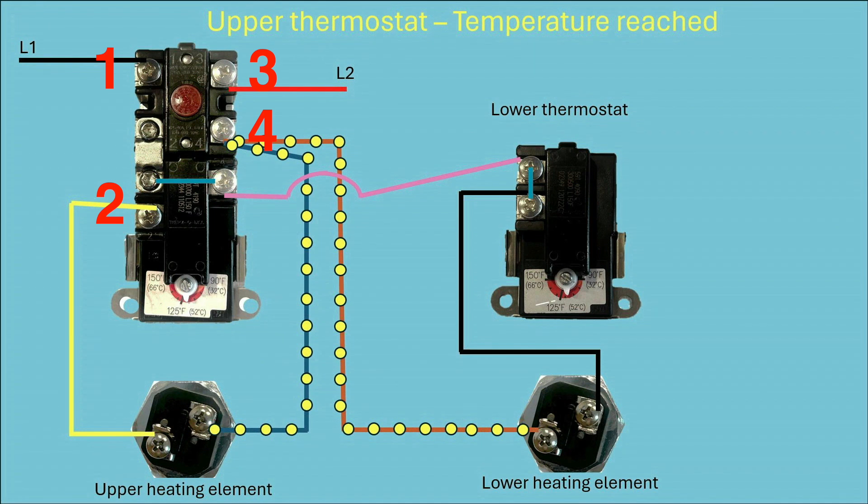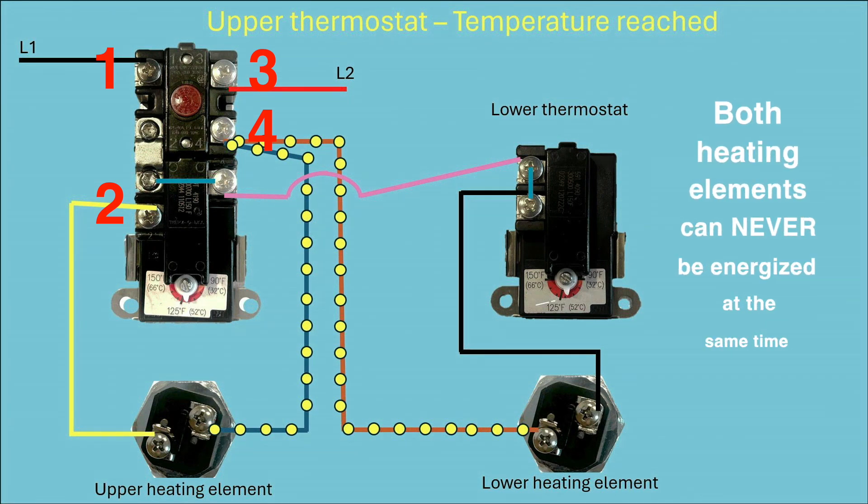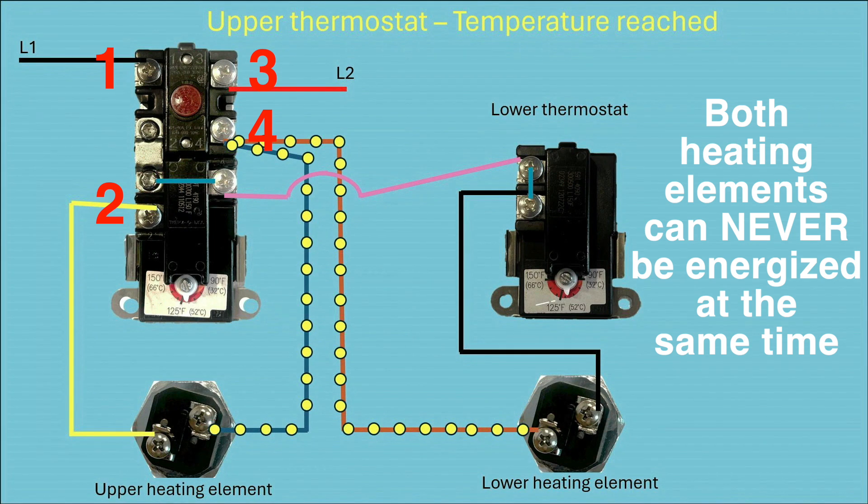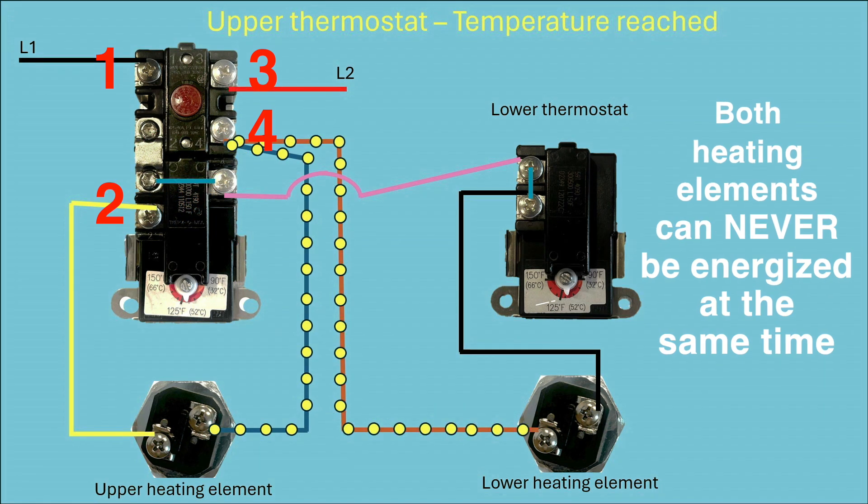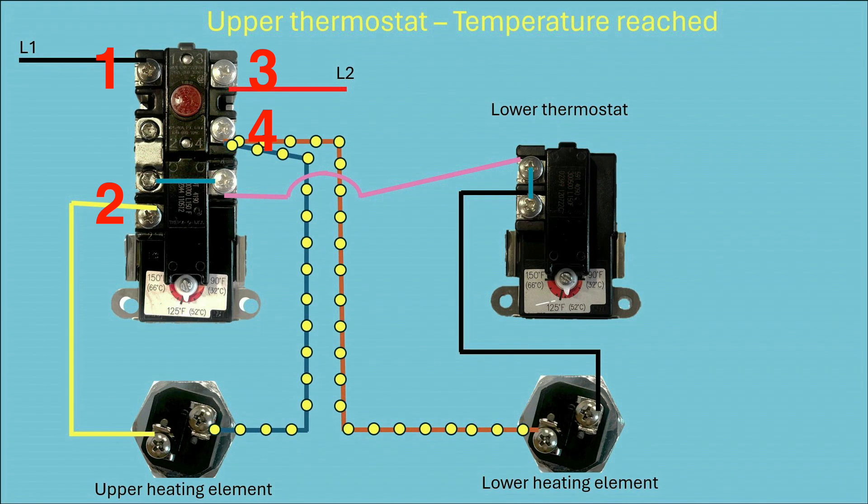And that switch, when it opens, it immediately switches over across the thermostat and sends power to the lower thermostat through that purple or pink wire. And one thing to note here is that you can only have power to one heating element at a time. Because of that switch over there on the left side of the upper thermostat, it can either send power to that yellow wire or to the purple wire. It can never send power to both wires at the same time or to both heating elements at the same time.